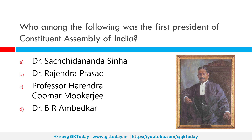Who among the following was the first president of the Constituent Assembly of India? The correct answer is Dr. Sachchidananda Sinha. Dr. Sachchidananda Sinha was the first president and temporary chairman of the Constituent Assembly when it met on December 9, 1946.